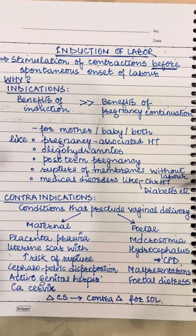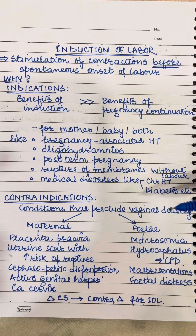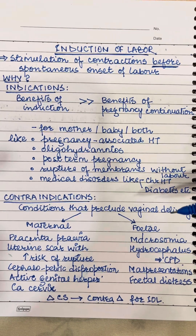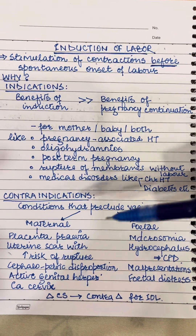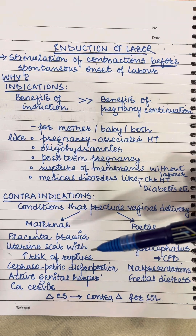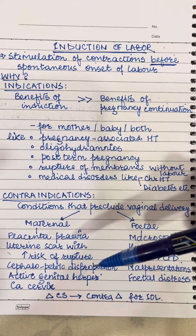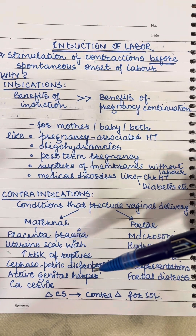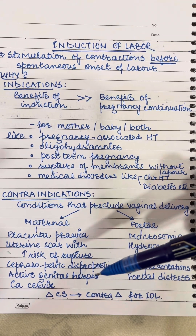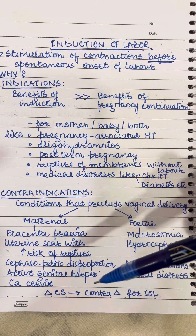The contraindications are conditions that preclude vaginal delivery. These could be maternal, like placenta previa, uterine scar with risk of rupture, cephalopelvic disproportion, active genital herpes, and carcinoma cervix.